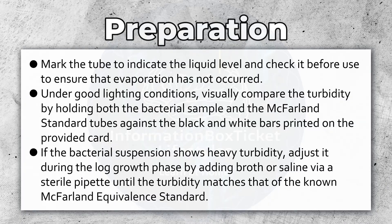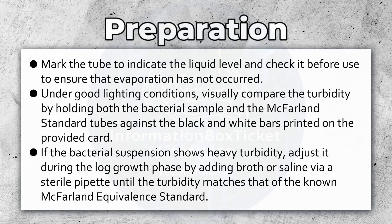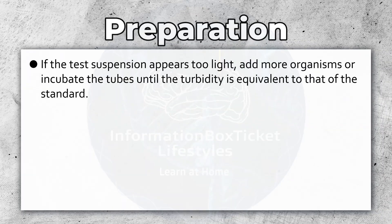If the bacterial suspension shows heavy turbidity, adjust it during the log growth phase by adding broth or saline via a sterile pipette until the turbidity matches that of the known McFarland equivalents standard. If the test suspension appears too light, add more organisms or incubate the tubes until the turbidity is equivalent to that of the standard.